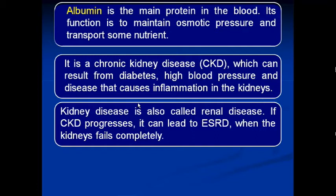Kidney disease is also called renal disease. If chronic kidney disease progresses, it can lead to end-stage renal disease, abbreviated as ESRD. When the kidneys fail completely, albumin is excreted in urine abnormally.